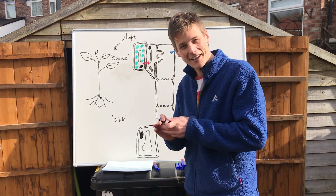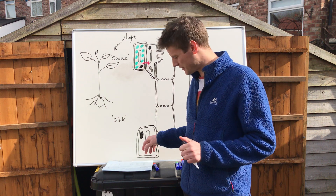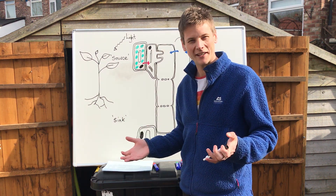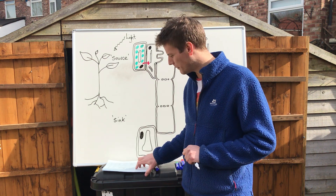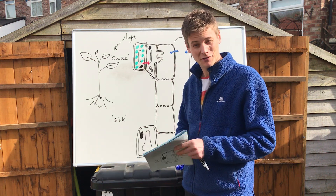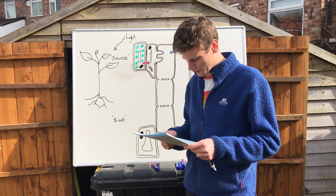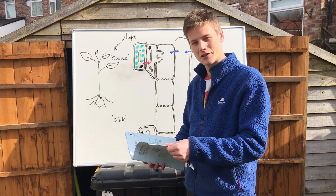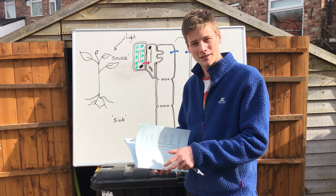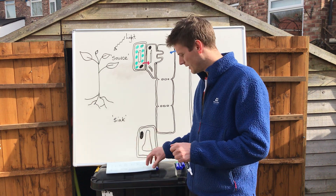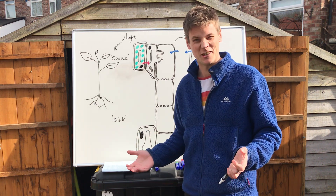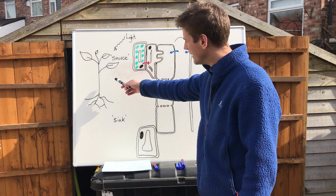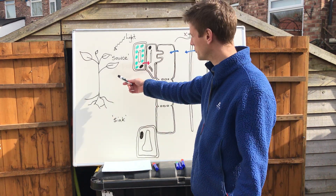Hello everybody, this is the first lesson I'm going to try and do from my back garden. It's on mass flow theory, so if you're following along at home, it's on page 12 in the transporting plants booklet. Let's see how this goes — here we can see a plant, very well drawn.